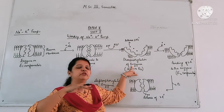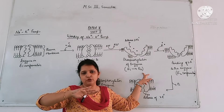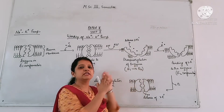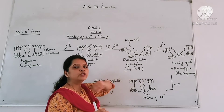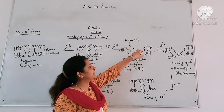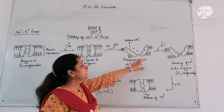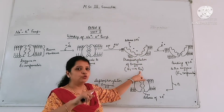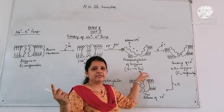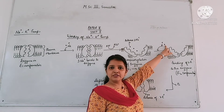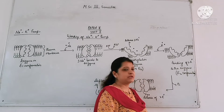This phosphorylation changes the enzyme from E1 to E2. Now E2 has very low affinity for Na+, so it releases 3 Na+ ions outside the cell. The conformation has changed from E1 to E2. In E2 conformation, the enzyme's affinity is high for K+. So it will bind with 2 K+ ions from outside the cell.